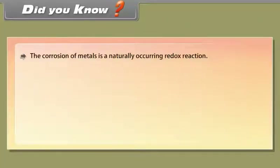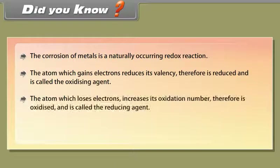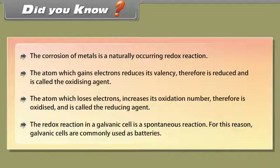Did you know? The corrosion of metals is a naturally occurring redox reaction. The atom which gains electrons reduces its valency, and is therefore reduced — it is called the oxidizing agent. The atom which loses electrons increases its oxidation number, and is therefore oxidized — it is called the reducing agent. The redox reaction in a galvanic cell is a spontaneous reaction; for this reason, galvanic cells are commonly used as batteries.